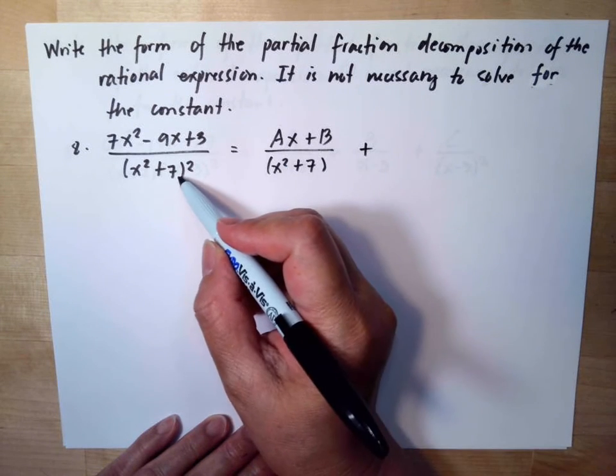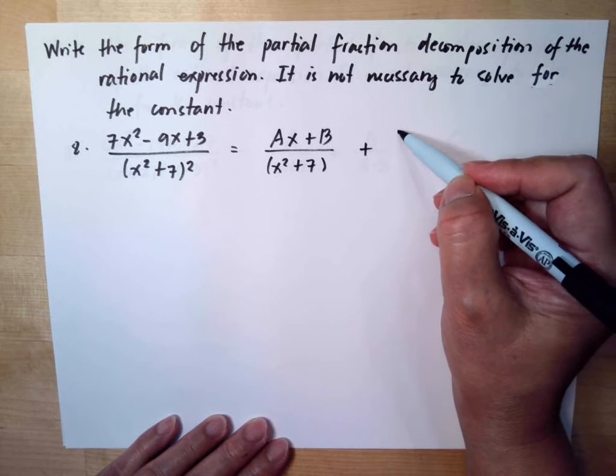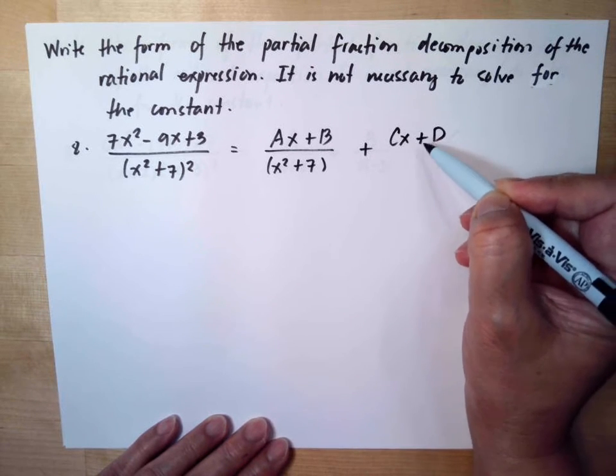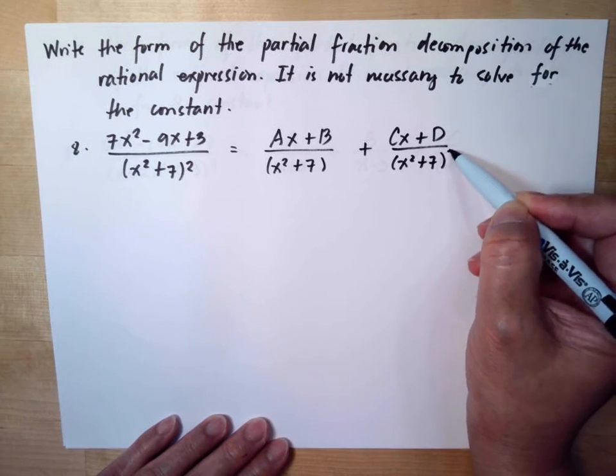Then plus, it is also x squared plus 7, but to the second power. So you have Cx plus D over x squared plus 7 to the second power.